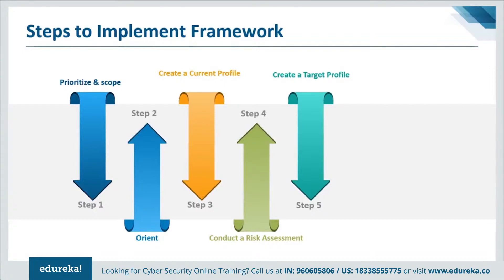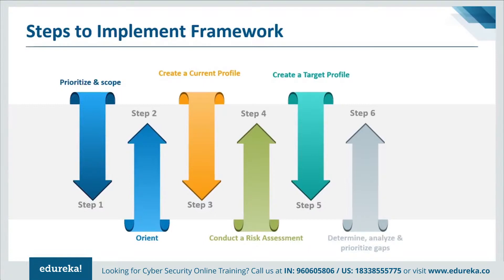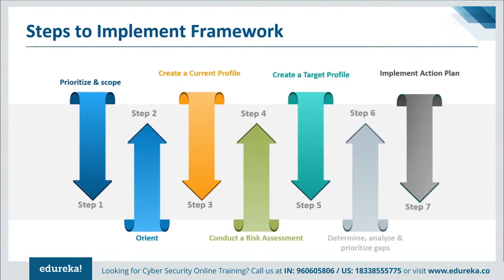The sixth step is to determine, analyze, and prioritize gaps. The organization compares the current profile and the target profile to determine gaps, then creates a prioritized action plan to address gaps reflecting mission drivers, costs and benefits, and risks to achieve outcomes in the target profile. The organization then determines resources, including funding and workforce, necessary to address the gaps. Using profiles in this manner encourages informed decisions about cybersecurity activities, supports risk management, and enables cost-effective targeted improvement.